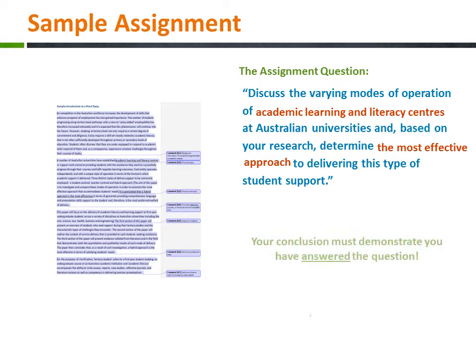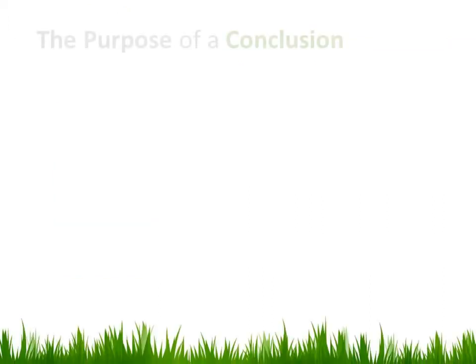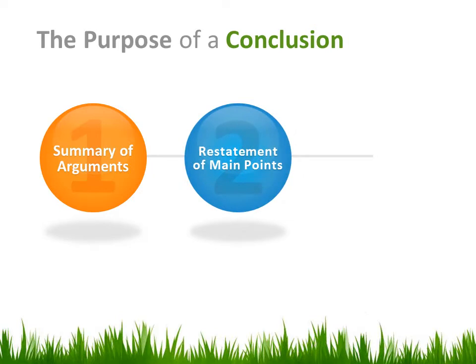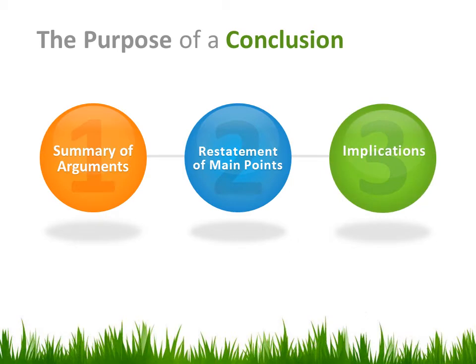Please keep in mind the key words in red which we will identify in our sample conclusion in a moment. Essentially, a conclusion consists of three main objectives. Firstly, it must summarise the arguments or information that has been presented in the body of the paper. The purpose of the conclusion is to consolidate the various issues or research data that have been covered in the core of your paper. Then, it must restate the key points that have been presented and reiterate the thesis statement. Finally, it should comment on any implications resulting from your discussion of the topic. This could include recommendations, forecasting future trends or the need for further research.